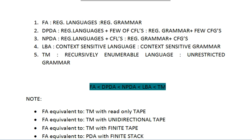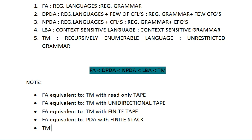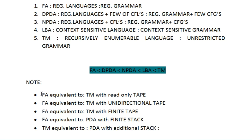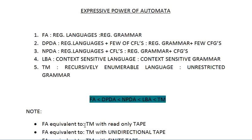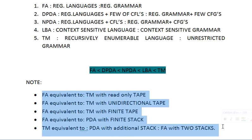Regarding Turing Machine equivalences: a Turing Machine is equivalent to a PDA with an additional stack — meaning more than one stack. Also, a Turing Machine is equivalent to a Finite Automata with two stacks, not just one. These are key equivalence points for competitive exam preparation.